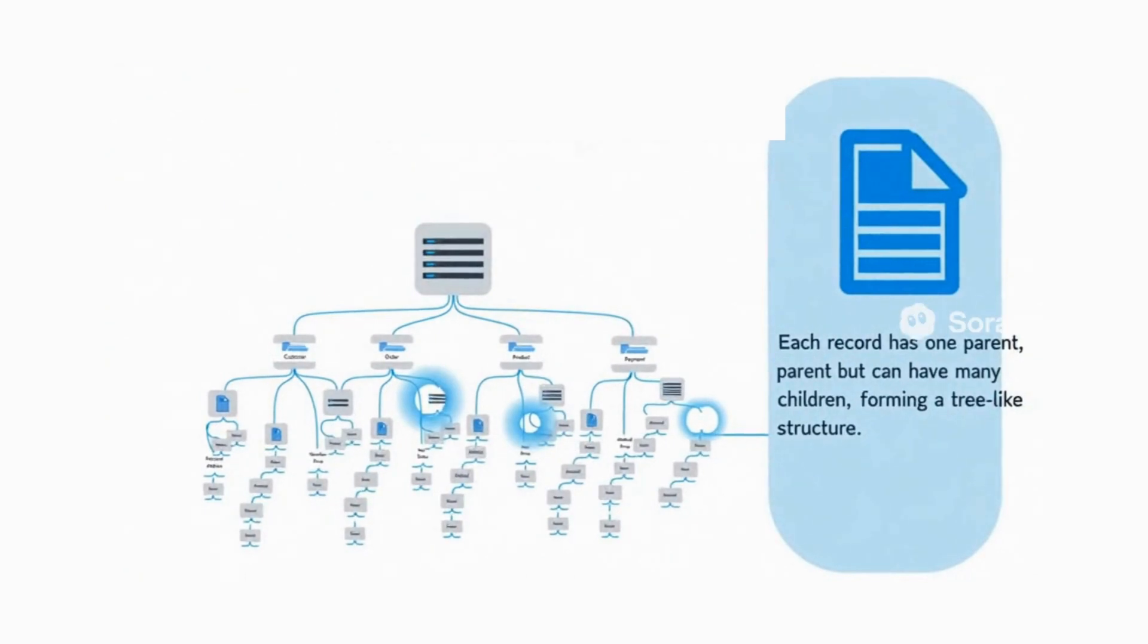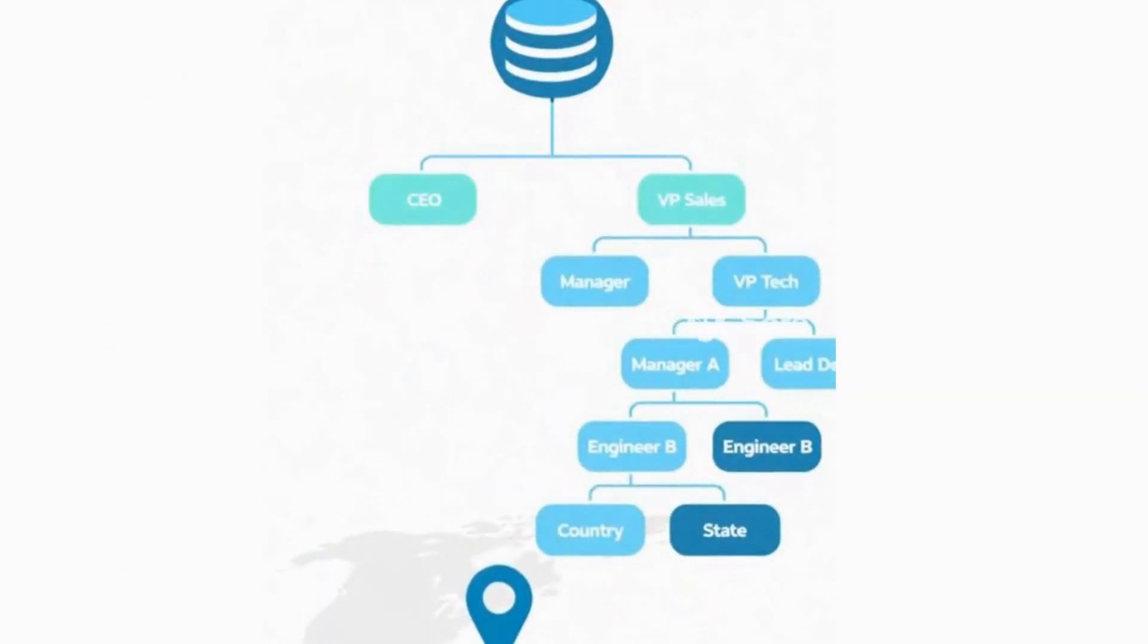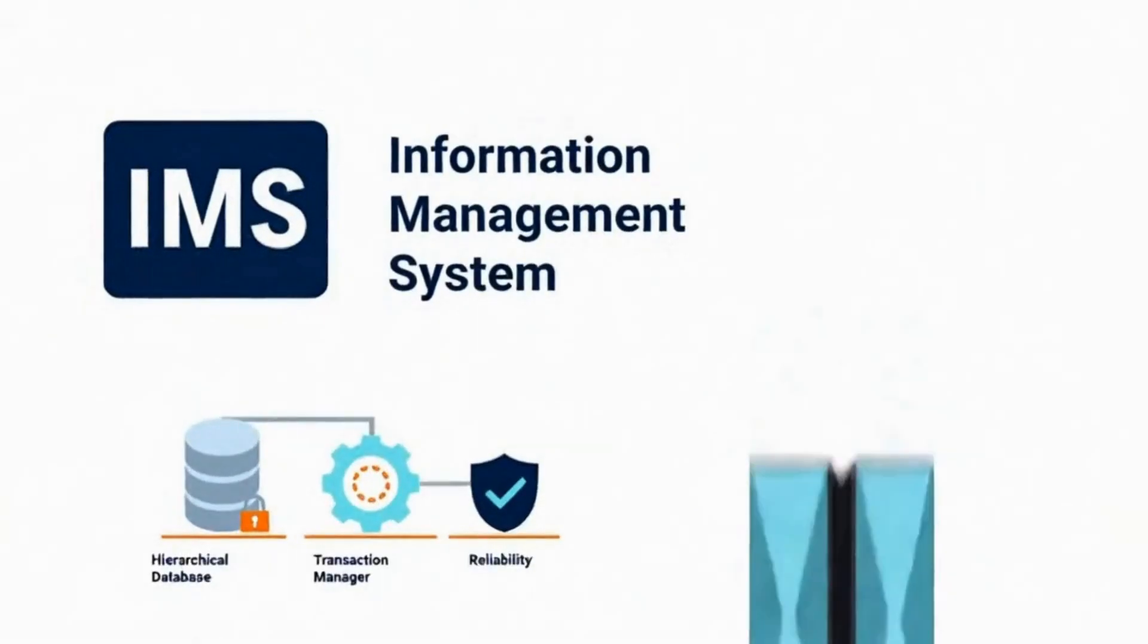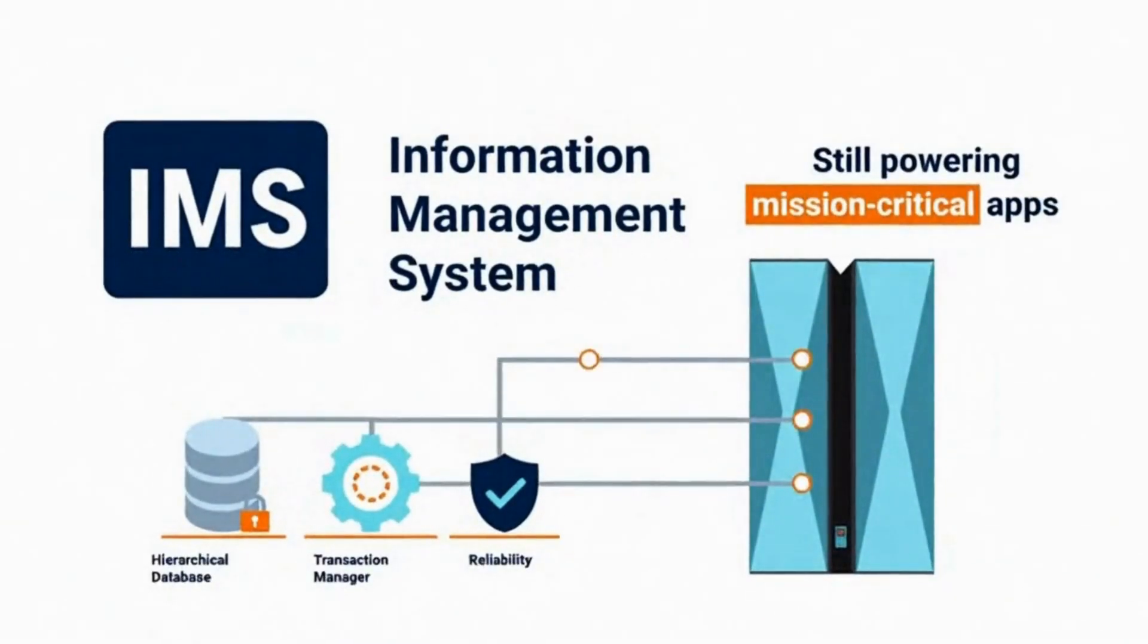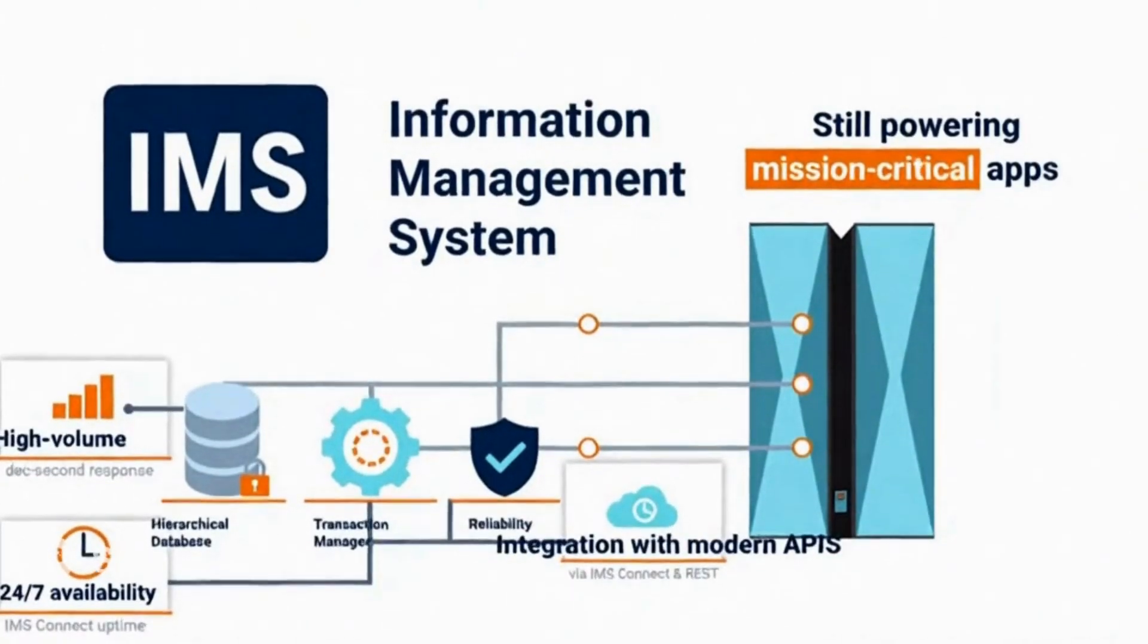These databases work the same way, with each piece of data having one parent and potentially many children. While not as common today, they're still used in specific applications like managing organizational structures or representing geographical data. IBM's IMS is a classic example that's still used by some large organizations for legacy systems.